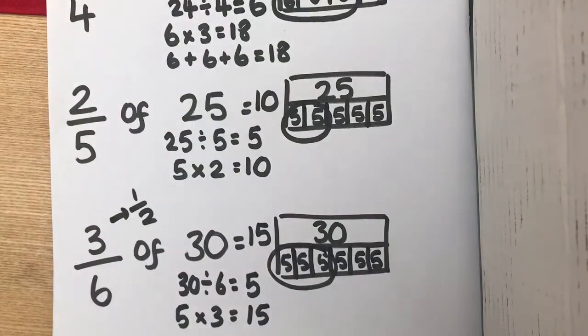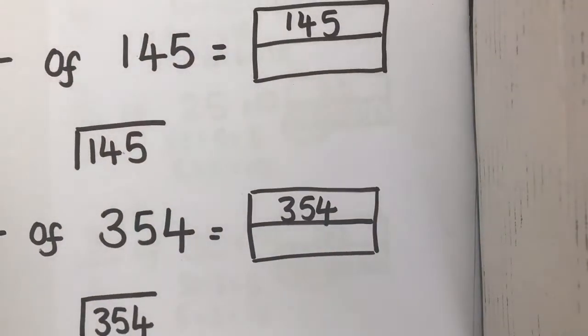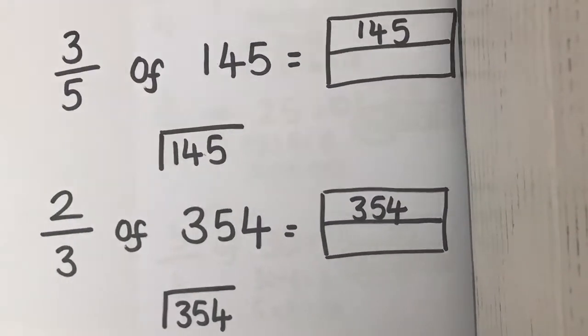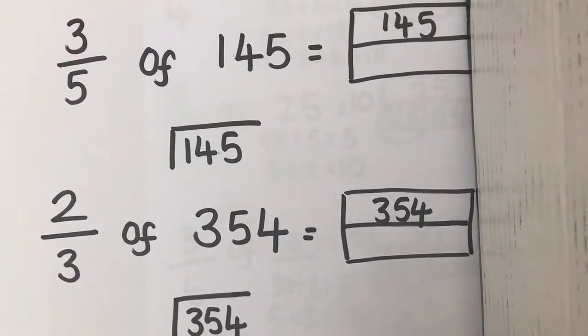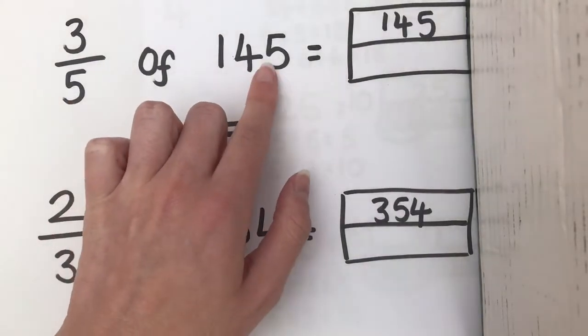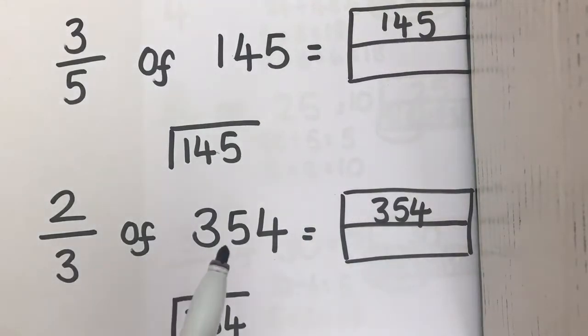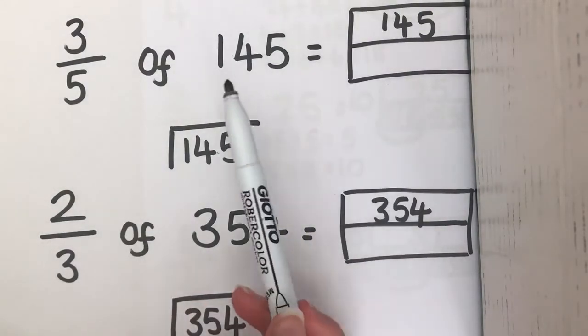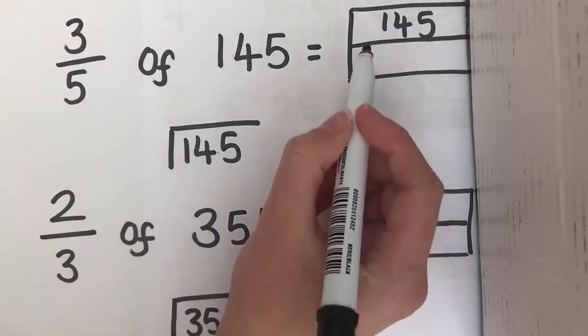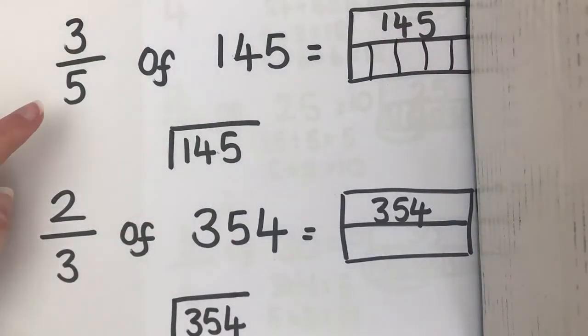Now, the next couple have got bigger numbers. And they might use some short division that I showed you the other day by a video. So, this time, we've got 3 fifths of 145. Now, I've put my 145 up there. You should know by now, through repetition, that our bottom bar is going to be split into 5 pieces. And to work out what each fifth is worth, we need to divide 145 by 5.